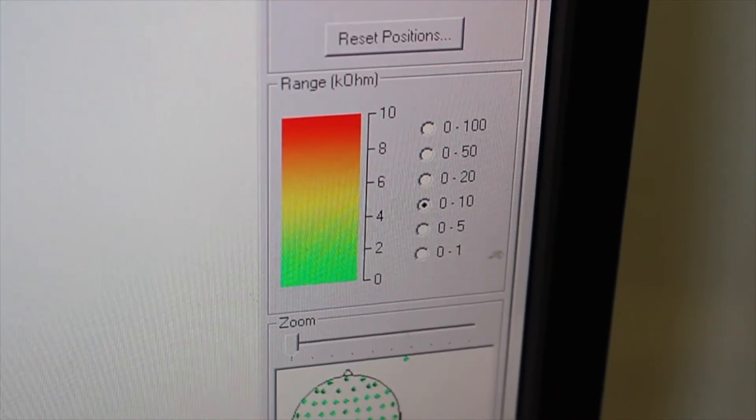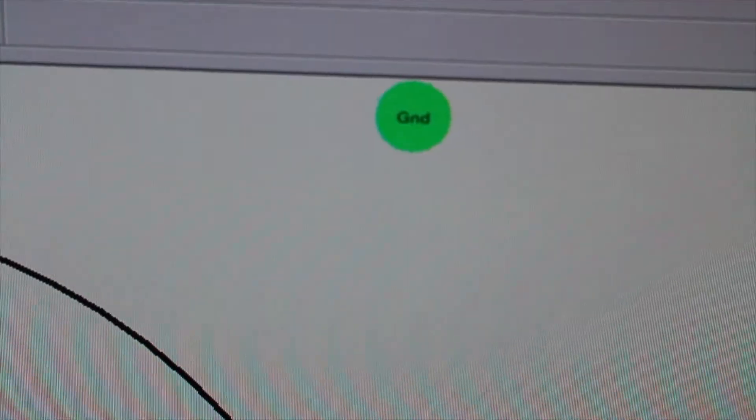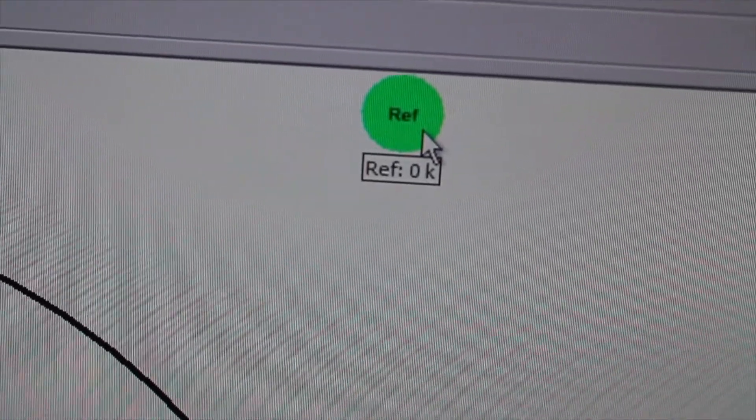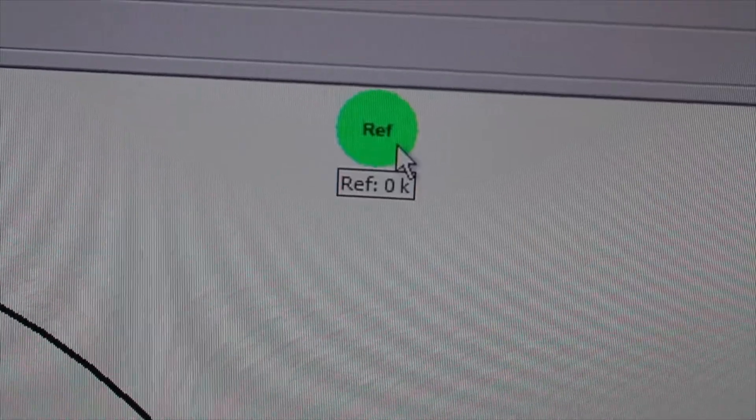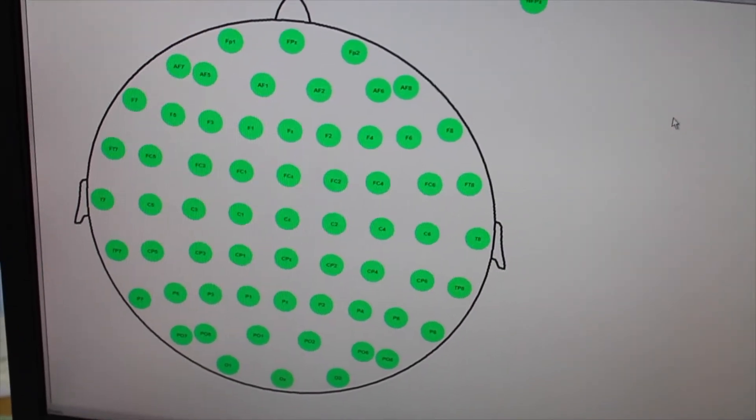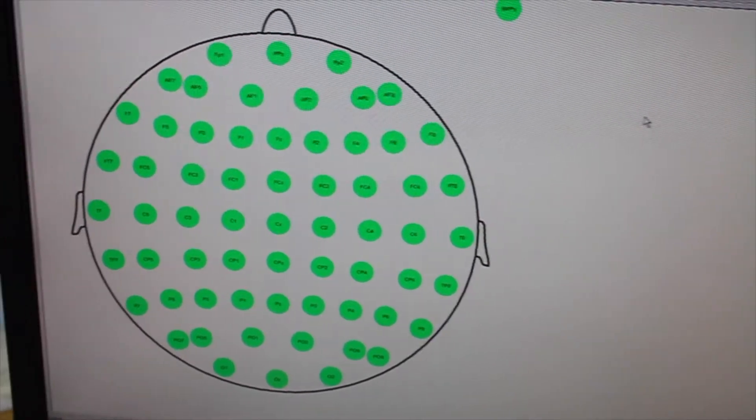However, you should be aiming for under 20 kilo ohms and for the reference and ground to be as low as possible. You can check the exact impedance measure of an electrode by hovering the mouse over it. Ideally, you want to see a nice green display of electrodes such as this particularly good example. You can check the reference and ground by selecting as so.